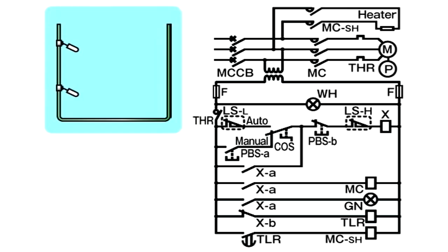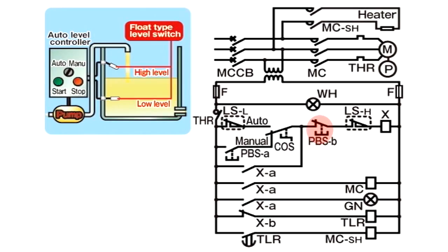Let's look at an example where the pump is stopped manually and then started again. The tank is about half full and the pump is operated in auto mode. At this time, L-S-H relay is on and the L-S-L relay is off. As P-B-S-B is pressed, current passing through X-A to P-B-S-B, L-S-H, and to X is cut, and X is demagnetised. In the subsequent sequence operation, X-A turns off and X does not remain in self-holding state, so pump operation comes to a stop.